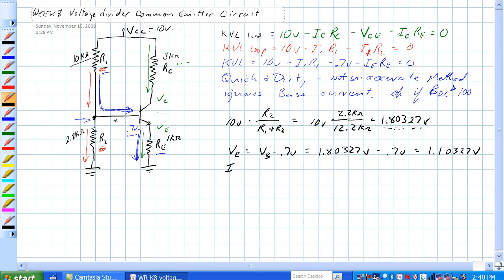So, emitter current is equal to VE divided by RE, is equal to 1.10327 volts divided by 1k ohms, equal to 1.10327 milliamps.